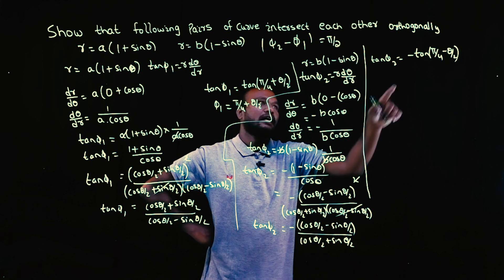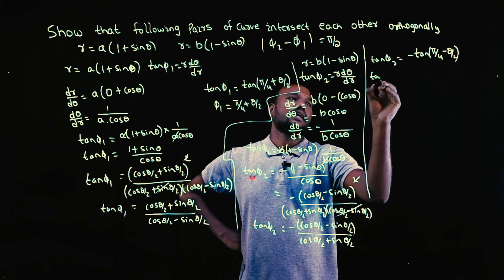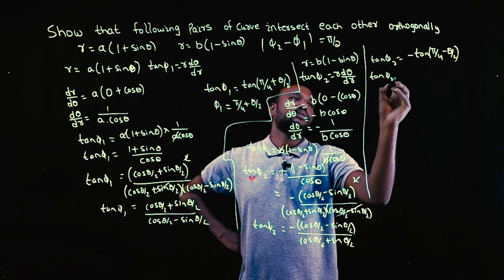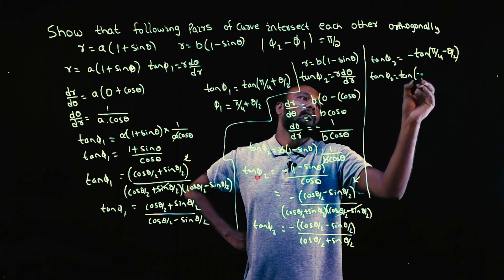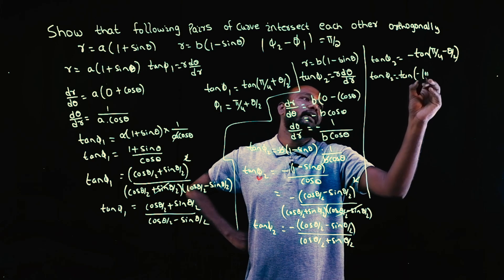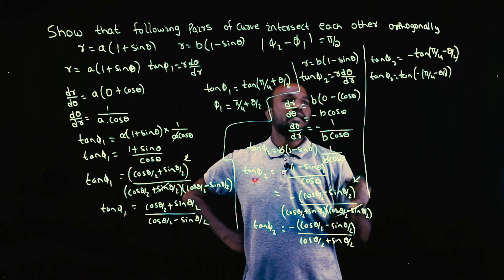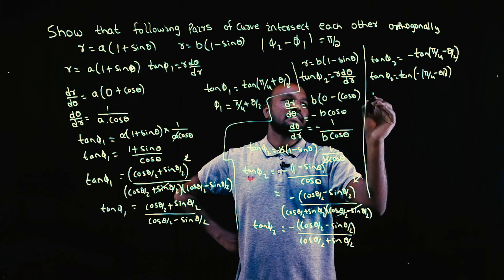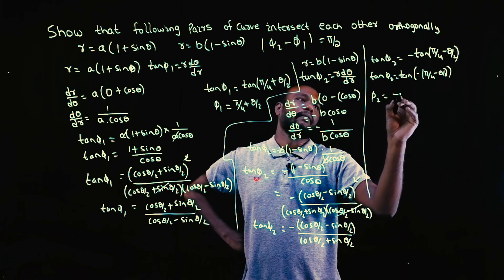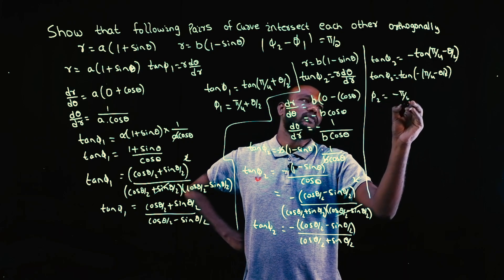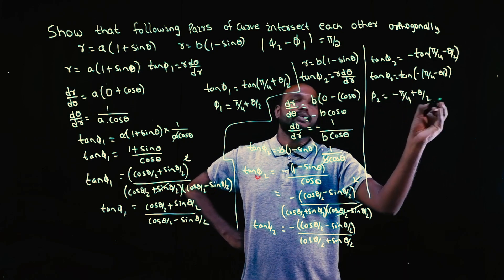So tan φ₂ equals tan(−(π/4 − θ/2)), meaning φ₂ equals −π/4 + θ/2.